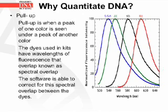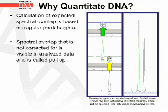Now let's go into pull-up. Pull-up is when a peak of one color is seen under a peak of another color. The dyes used in the kits have wavelengths of fluorescence that overlap, and this is known as spectral overlap. The software is able to correct for the spectral overlap between the dyes. From the graph, the areas in common to the dyes are the areas where spectral overlap would occur. The closer the dyes are in their wavelengths to each other, the more spectral overlap occurs. The calculation of expected spectral overlap is based on regular peak heights; the spectral overlap that is not corrected for is visible in analyzed data and is called pull-up.